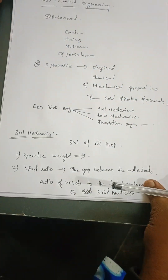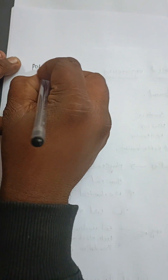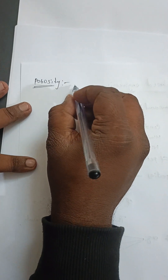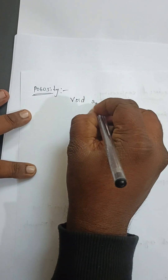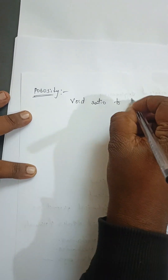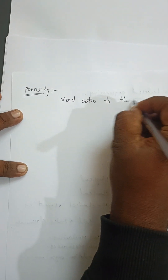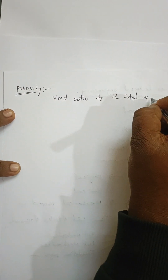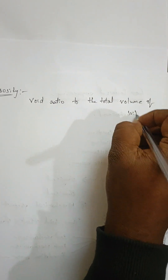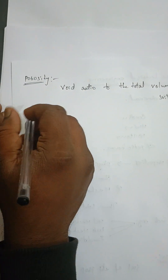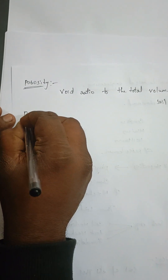After specific weight and void ratio, the next key concept is porosity. Porosity is the ratio of the volume of voids to the total volume of soil. So while void ratio compares voids to solid particles, porosity compares voids to the total volume of soil. This is called porosity.